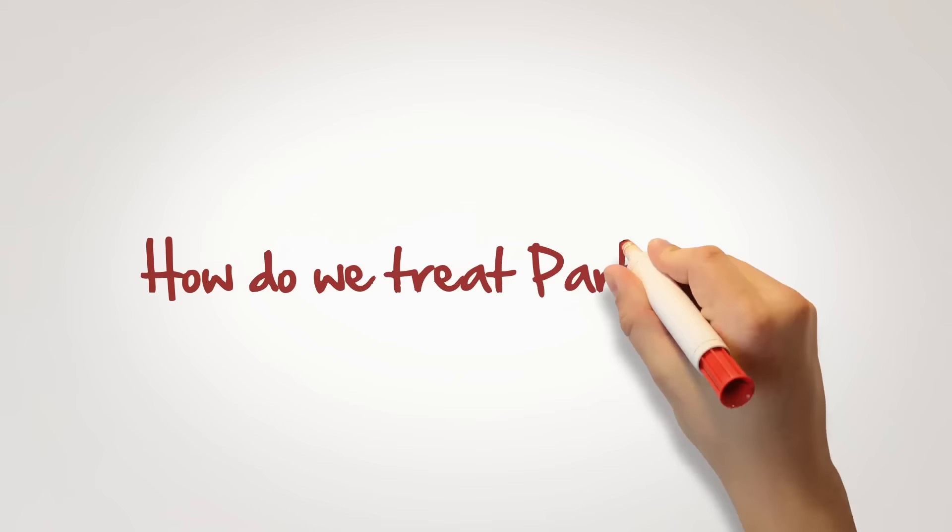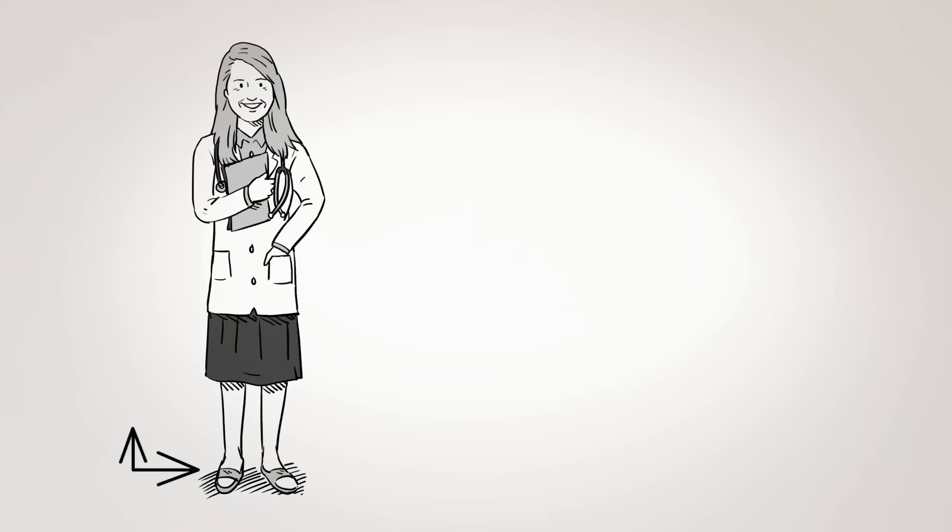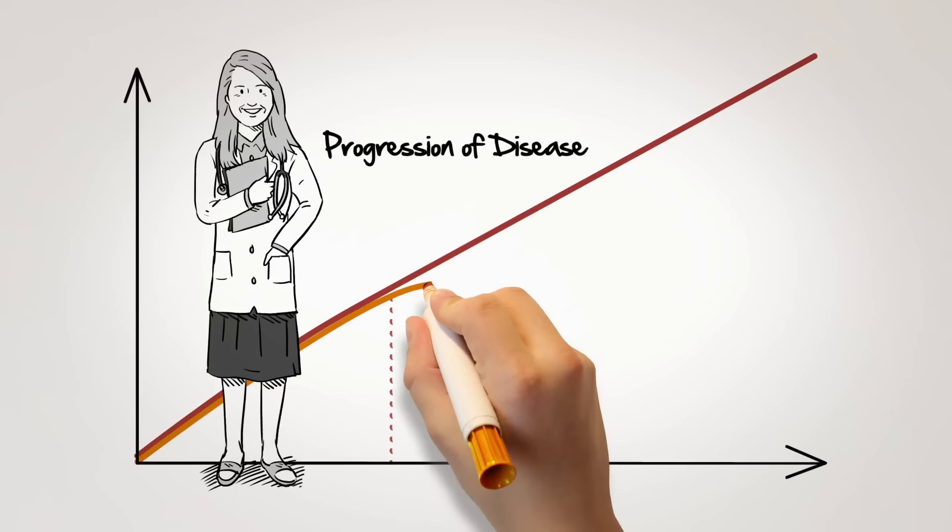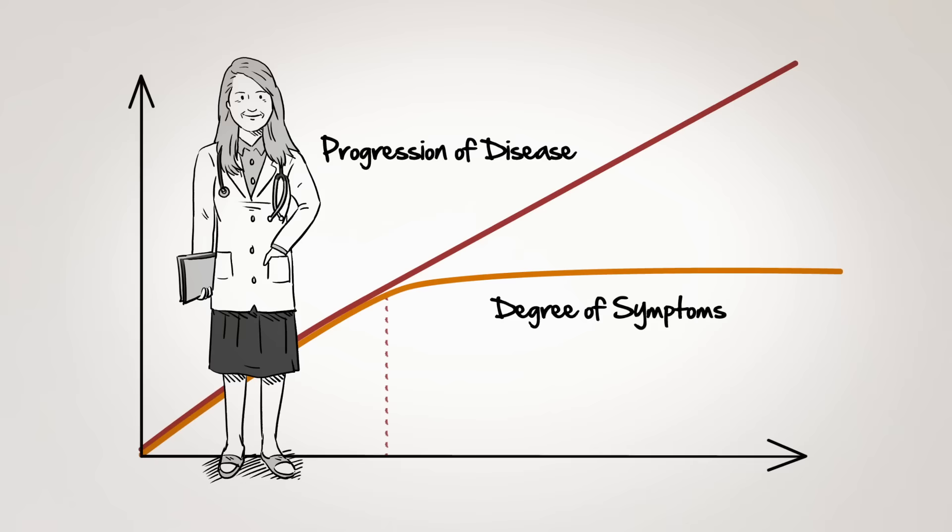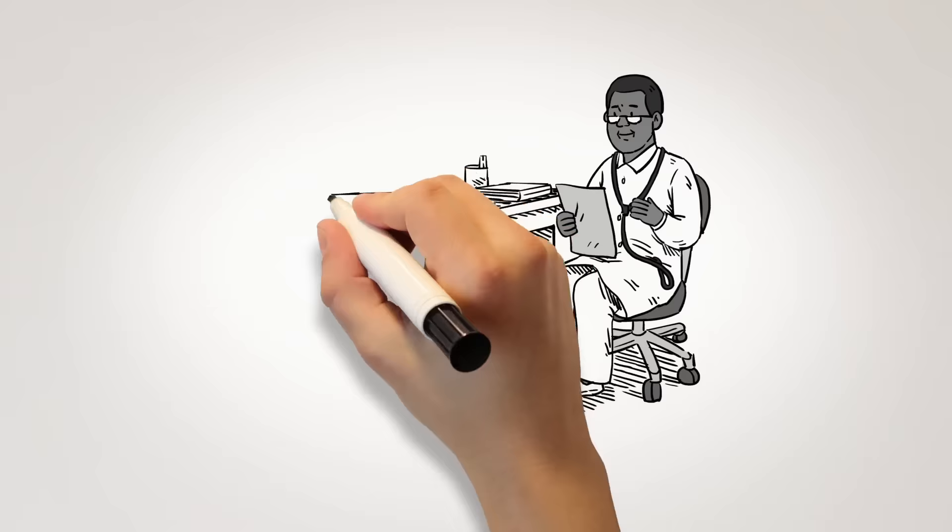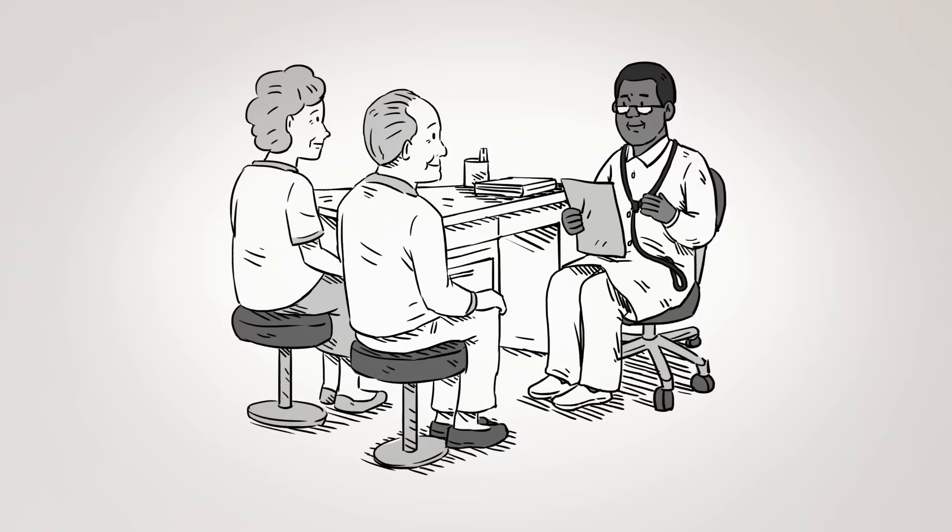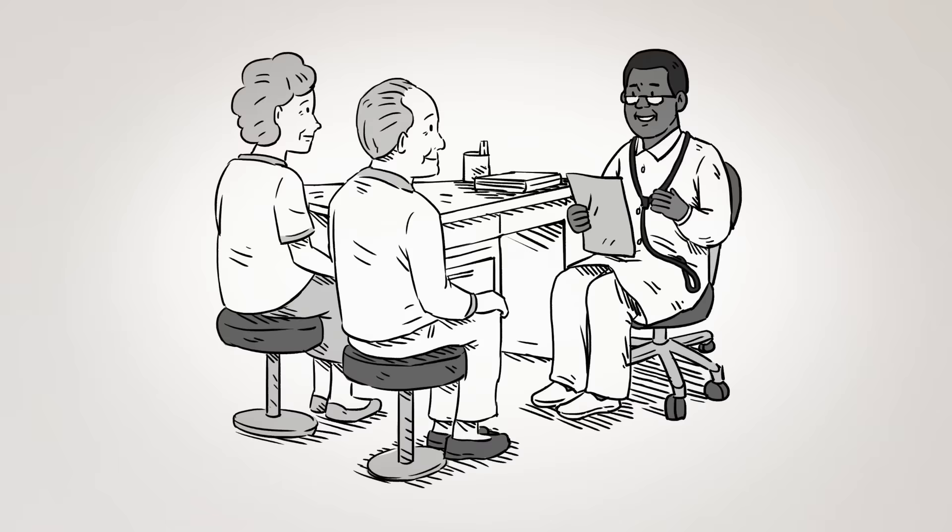But how do we treat Parkinson's today? Here's what I told my own patients when I was a doctor in clinical practice. The currently available PD medications can't slow or stop the progression of the disease, but they can ease symptoms and help you continue doing much of what you have always done. The same goes for certain surgical procedures, which are a good option for some people. The most important point is that treatment regimens need to be individualized. So you should work closely with your doctor to determine what medication or combination of therapies work best for you and your symptoms.